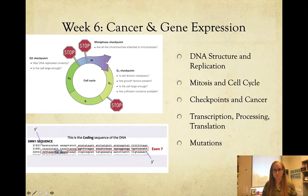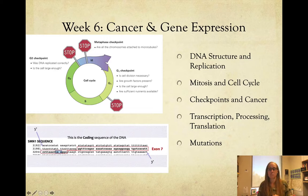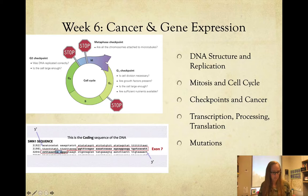Then we moved on to mitosis, the cell cycle, and cancer. We looked at DNA structure and replication, checkpoints in the cell cycle, and how missing checkpoints can lead to cancer. Then we did gene expression: transcription, processing, and translation, and what mutations do — specifically the SMN1 mutation for spinal muscular atrophy. Remember that messenger RNA looks just like the coding strand; we read in triplets and remove introns.